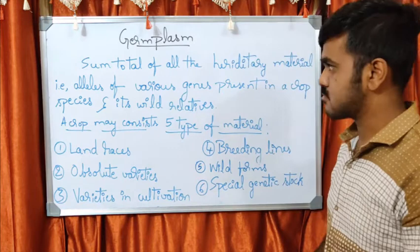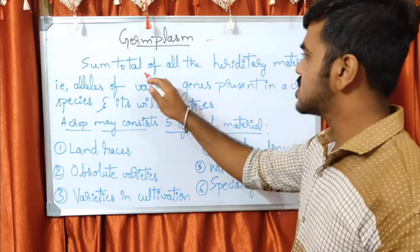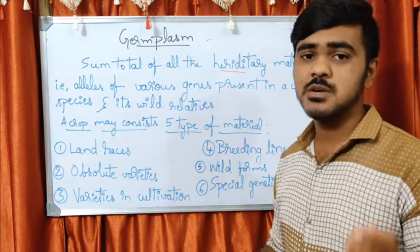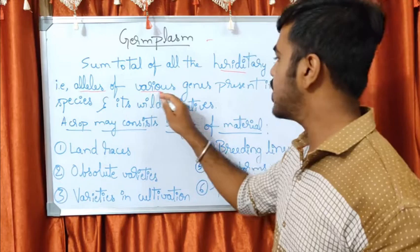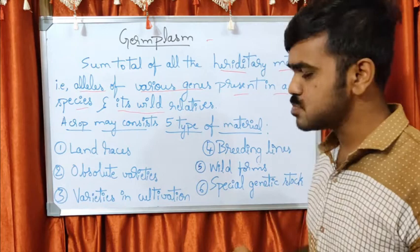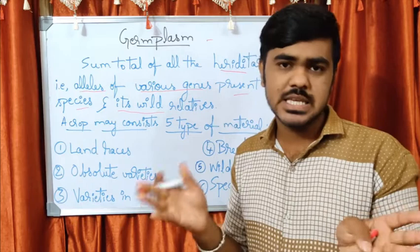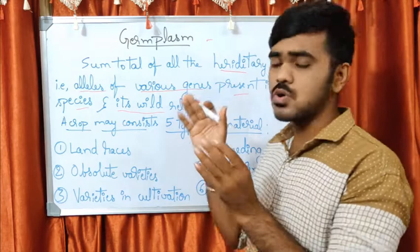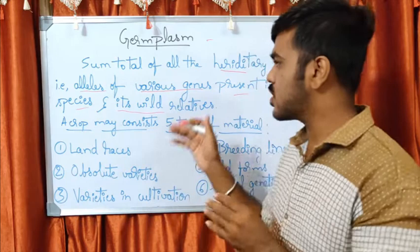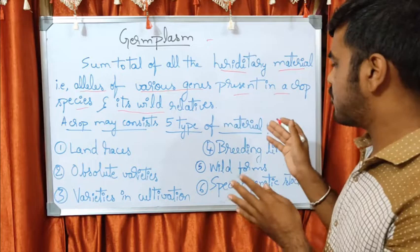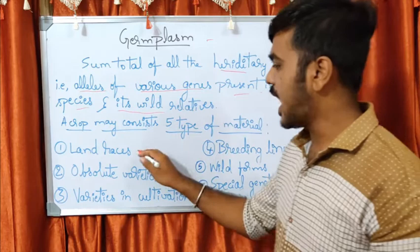Let's begin with germplasm. The germplasm of a crop is defined as the sum total of all the hereditary material — that is, the alleles of various genes — present in a crop species and its wild relatives. All the alleles in a particular crop and its wild relatives together form the entire pool known as germplasm.